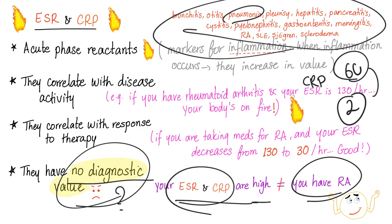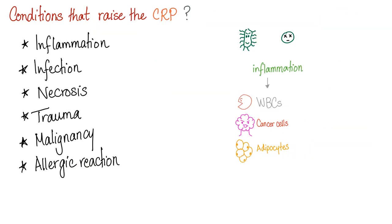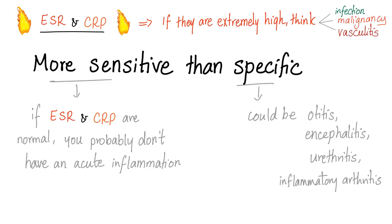"I will diagnose you based on your CRP," said no doctor ever. Conditions that raise CRP are non-specific: inflammation, infection, necrosis, trauma, malignancy, and allergy. If ESR and CRP are extremely high, think infection, malignancy, or vasculitis.